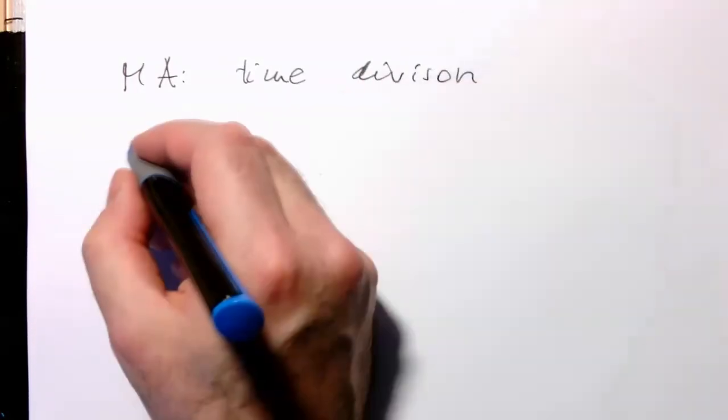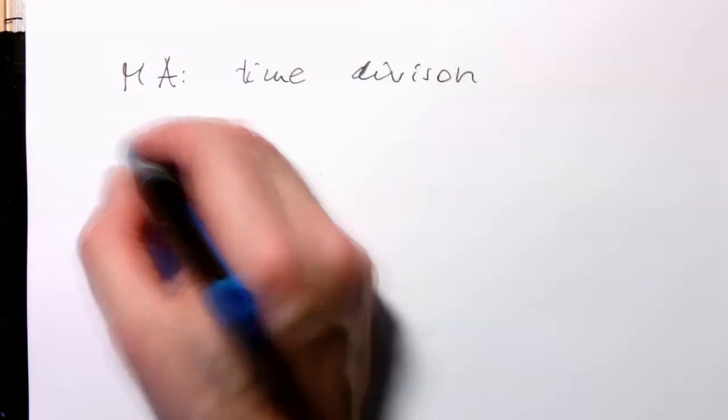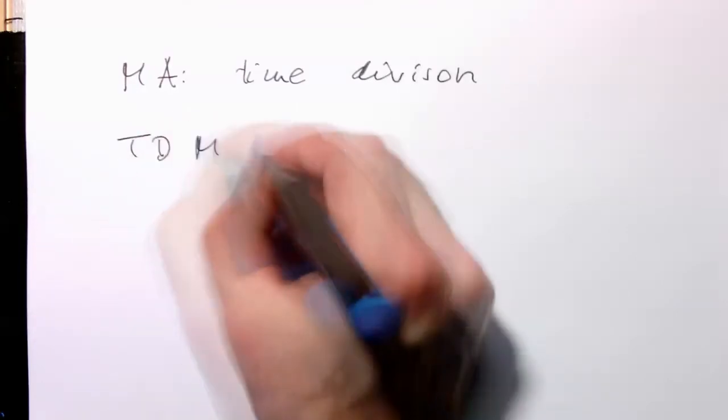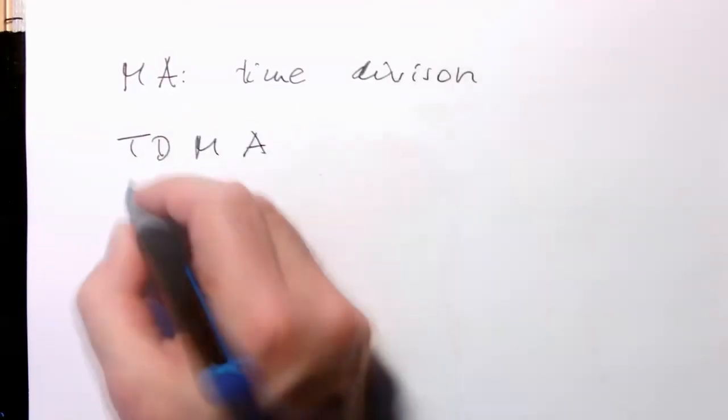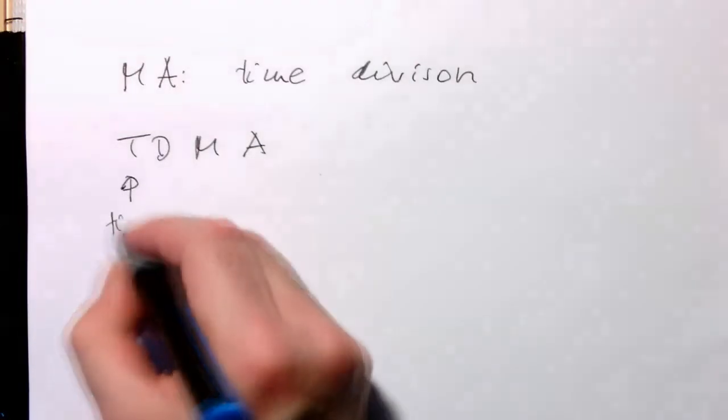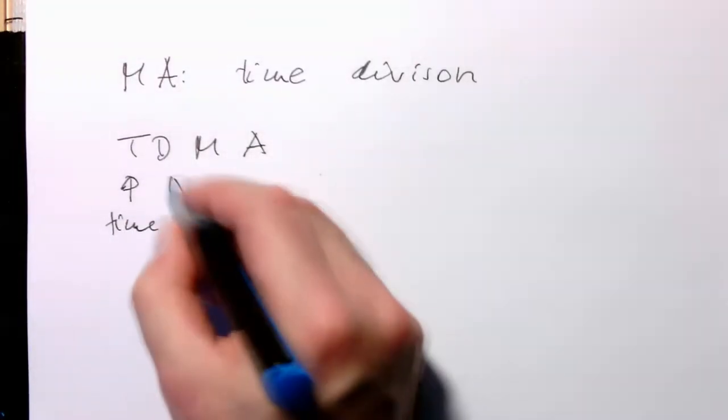For this reason, this is called TDMA - T for time and D for division.